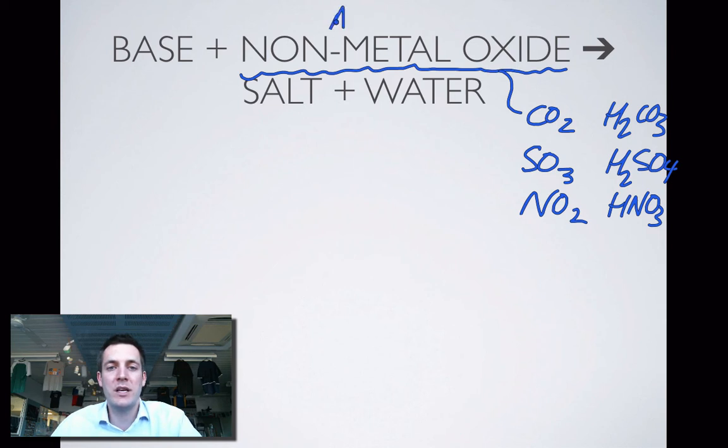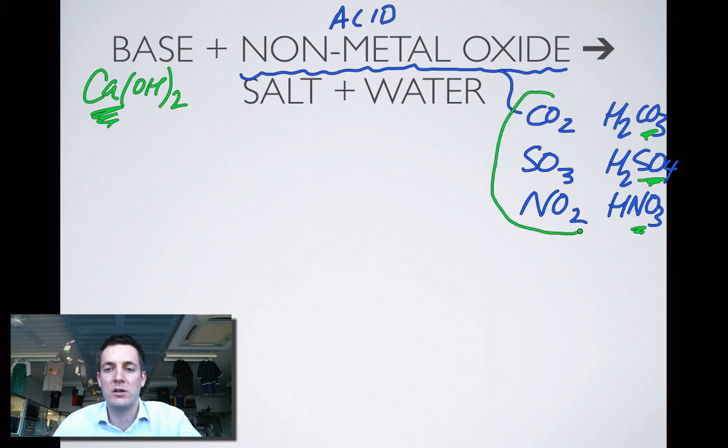Why is that useful? Because then this just becomes acid plus base makes salt and water. So I'm going to choose a base here, let's say calcium hydroxide. Acid plus base makes salt and water, where the salt has the metal from the base and the negative ion from the acid. So I'd make calcium carbonate, calcium sulfate, calcium nitrate with those three non-metal oxides, and I'd also make water.